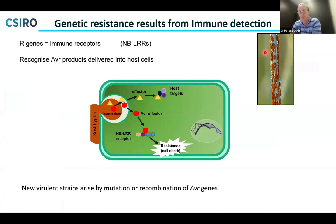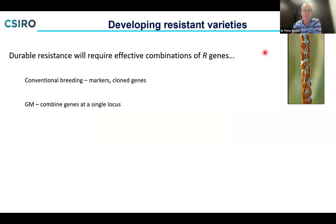Typically, the main output of the resistance response is very localized cell death — the infected cell essentially commits suicide to prevent the fungus from spreading to other parts of the plant. When we think about how new virulence strains like UG99 arise, it's through mutation or recombination of avirulence genes so they lose the factors being recognized by a particular resistance gene. To develop resistant varieties, we need new effective resistance genes — but really combinations of them — to minimize the chance of pathogen mutation giving rise to virulence.